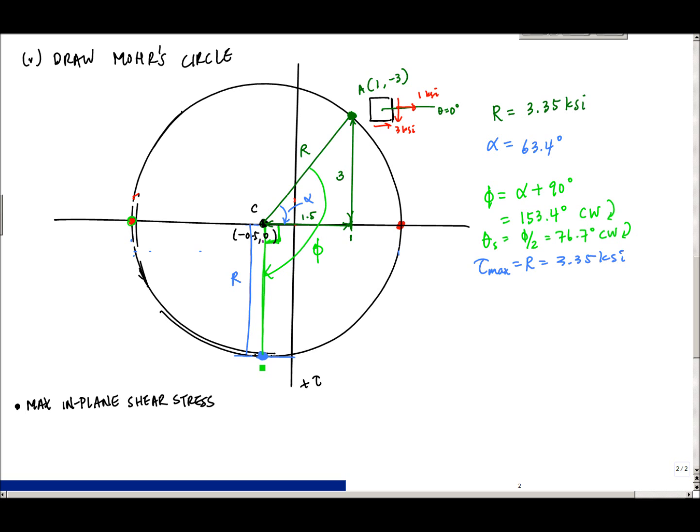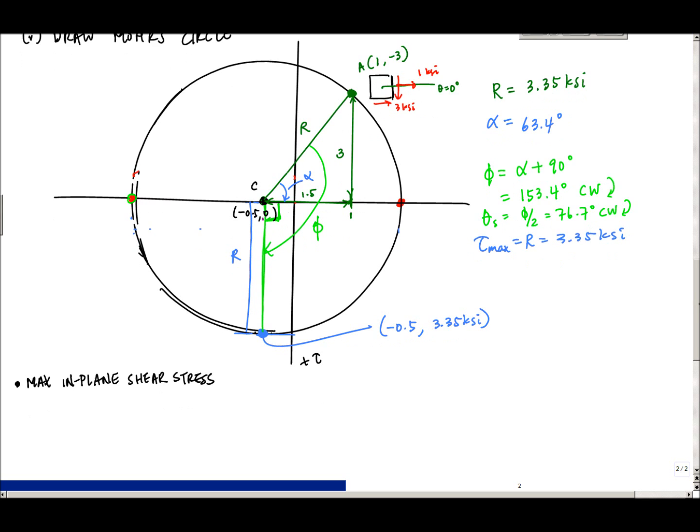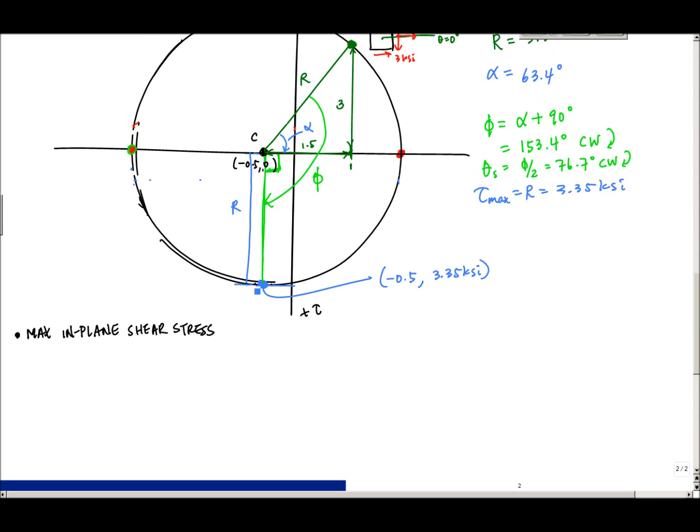And so here, this point right here, if I want to draw, I know my stress, I know the coordinates of that point. What are the coordinates of that point? The coordinates of this point are minus 0.5 ksi comma 3.35 ksi. And now I want to draw the state of stress here.